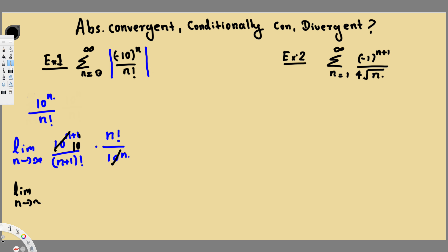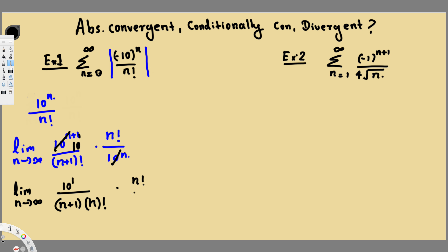Taking the limit as n approaches infinity: we have 10 power 1 left, and the factorial expands like (n+1) · n · (n−1) · (n−2) ... down to 2 · 1. After the n factorial part, everything else cancels with the n factorial in the numerator. The remaining thing is 10 over (n+1).